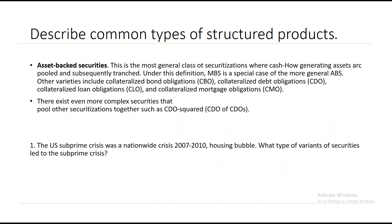Asset-backed securities (ABS) represent the most general case of securitization where cash-flow-generating assets are pooled and subsequently tranched. Under this definition, MBS is a special case of the more general ABS. Other varieties include collateralized bond obligations, collateralized debt obligations (CDOs), collateralized loan obligations, and collateralized mortgage obligations. There are even more complex securities like CDO-squared — CDOs of CDOs.